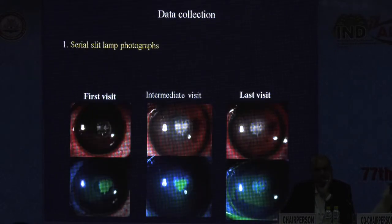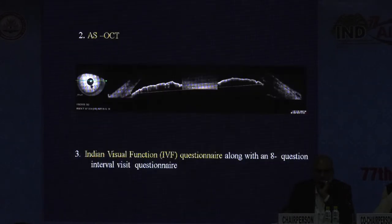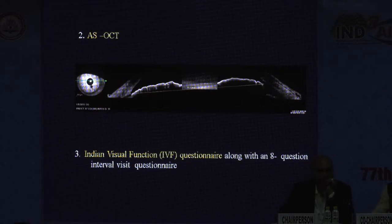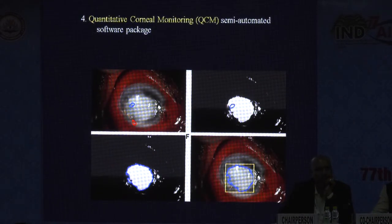All patients underwent slit lamp examination, corneal scrapings, and serial slit lamp photographs in 10x and 16x magnification in white light and cobalt blue light using a Canon 7D camera mounted on a Haag-Streit slit lamp. Anterior segment OCT was used for intraocular measurement. Health-related quality of life was evaluated by the Indian Visual Function Questionnaire consisting of 33 questions validated in English and Tamil, along with an 8-question interval visit questionnaire.